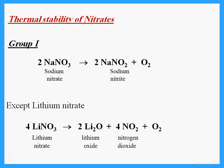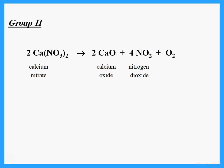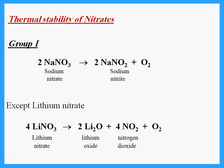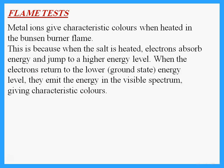For nitrates: Group 1 nitrates decompose on heating to form the nitrite plus oxygen — for example, sodium nitrate gives NaNO₂ plus O₂. This applies to all Group 1 except lithium. Lithium nitrate breaks up like Group 2 nitrates, giving lithium oxide, nitrogen dioxide, and oxygen. Group 2 nitrates similarly give the metal oxide plus NO₂ plus oxygen when heated.